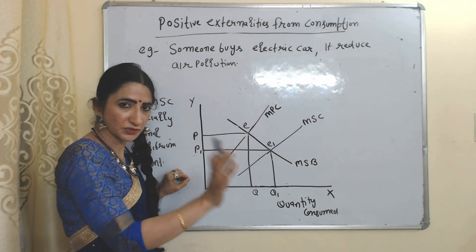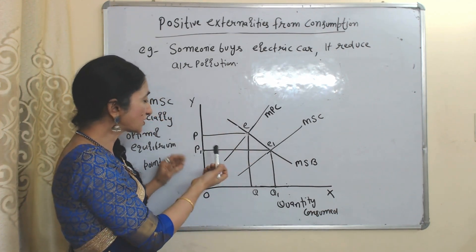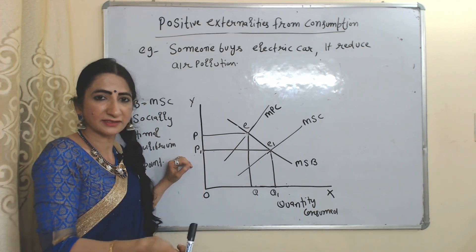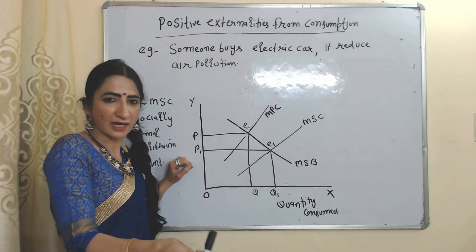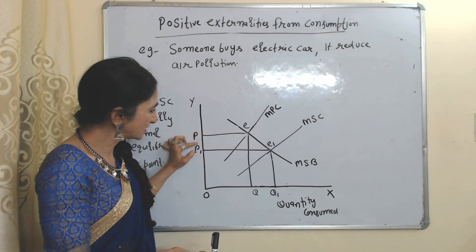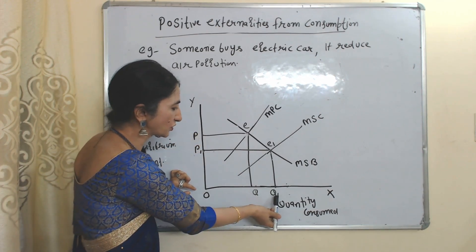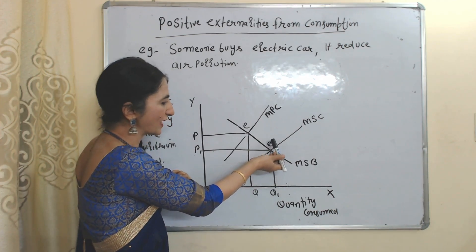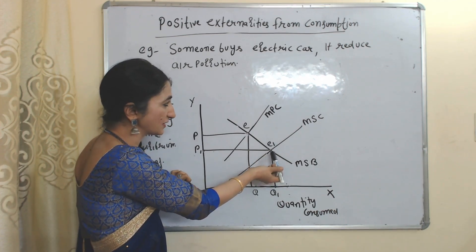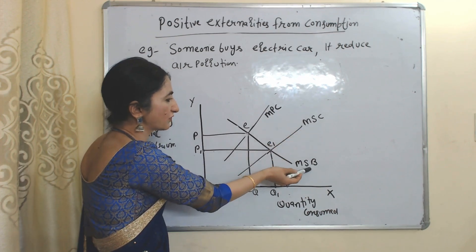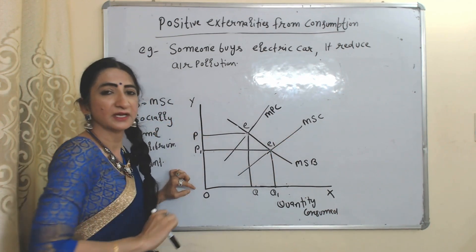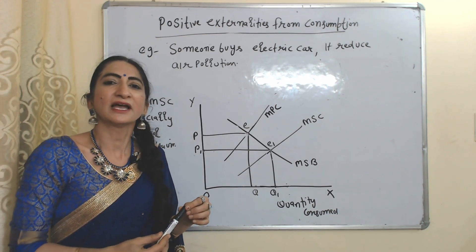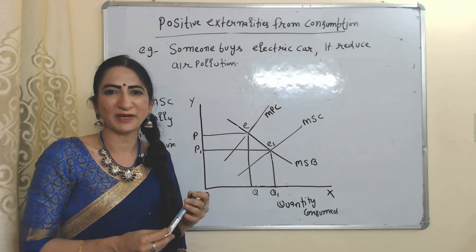That's why consumption of this product should be increased. In order to increase consumption, the government should reduce taxes on electric cars. As a result, prices reduce and consumption increases from Q to Q1. E1 will be called the socially optimum equilibrium point, where marginal social cost equals marginal social benefit. So this is all about externalities from consumption and production. I think you got it — thank you so much for watching this video, bye, take care.